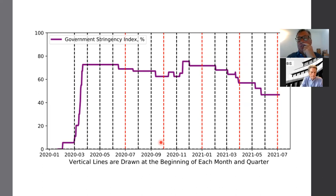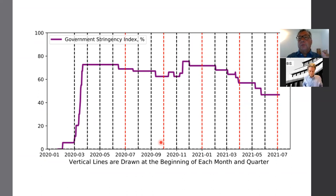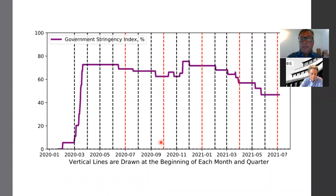We're looking at things like the balance sheets of the household sector. One particularly interesting fact in our surveillance reports is the numbers published by the Fed on the household balance sheet. If you look at checkable deposits and cash from 2019 up until the end of the first quarter of this year, they've accumulated an additional $2.3 trillion in cash — money that's basically sitting there ready to be spent, invested in real estate or other financial assets, or saved due to precautionary motives.